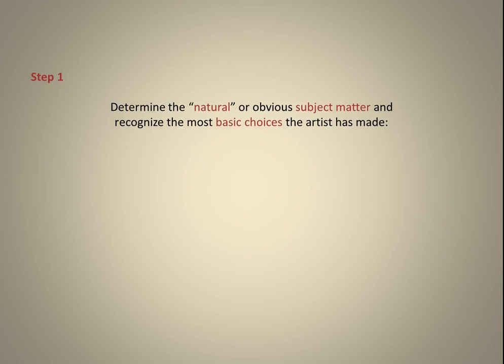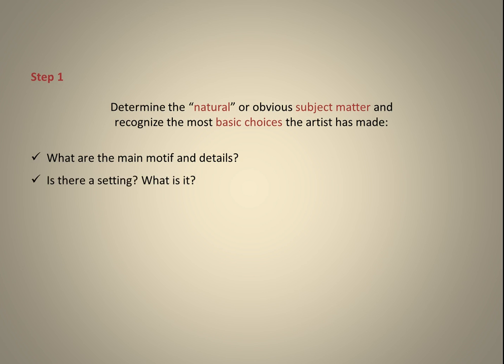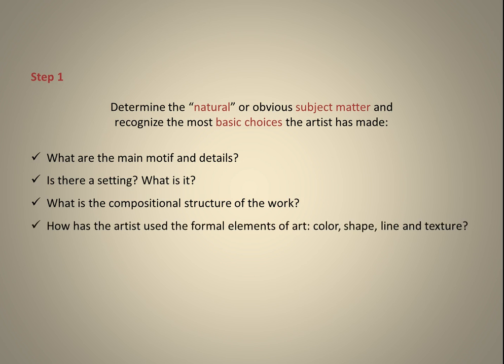Step 1: Determine the natural or obvious subject matter and recognize the most basic choices the artist has made. What are the main motif and details? Is there a setting? What is it? What is the compositional structure of the work? How has the artist used the formal elements of art — color, shape, line, and texture? Does the work have an obvious feeling or expression?